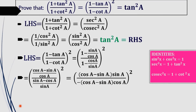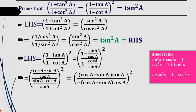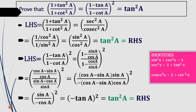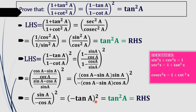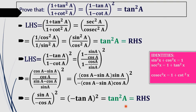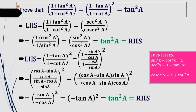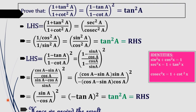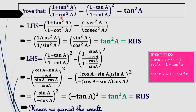After simplification, sin a moves to the numerator and cos a to the denominator. The term (cos a - sin a) and -(cos a - sin a), i.e., (sin a - cos a), cancel each other, leaving sin a / (-cos a) = -tan a. Squaring gives (-tan a)² = tan²a, which is our required RHS. Hence, all three terms are proved equal.